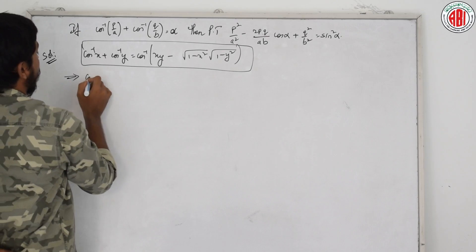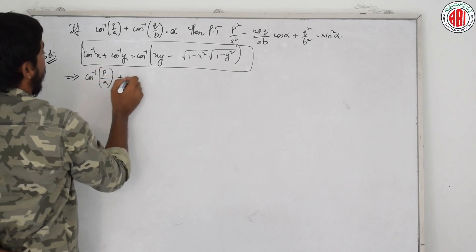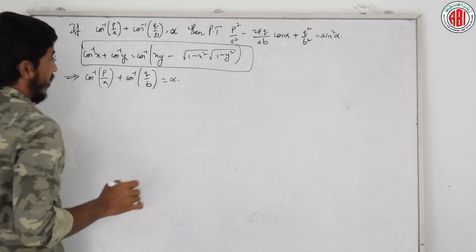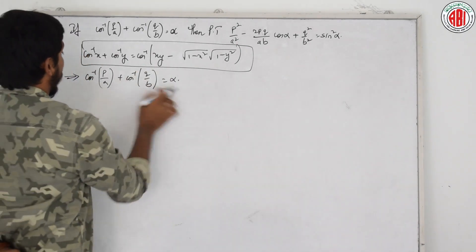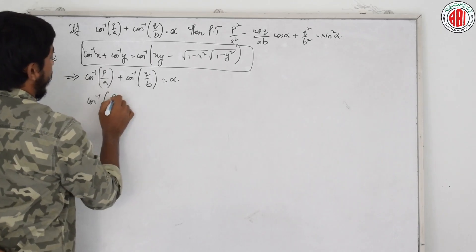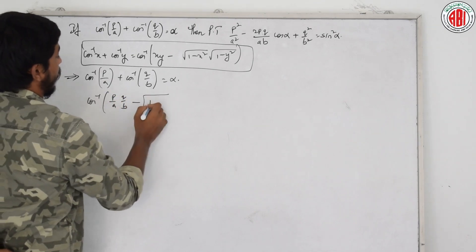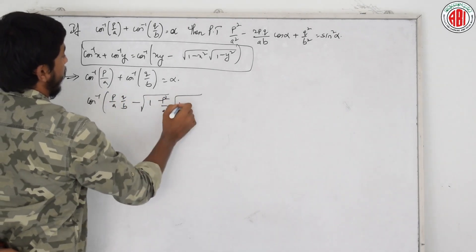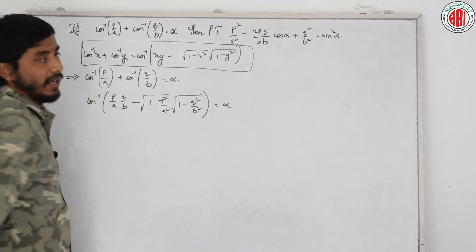That is, cos inverse p by a plus cos inverse q by b is equal to alpha. Applying the formula, that will become cos inverse of p by a times q by b minus under root of 1 minus p square by a square into under root of 1 minus q square by b square, and that equals cos alpha.